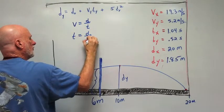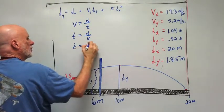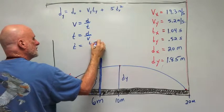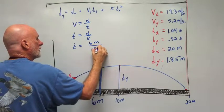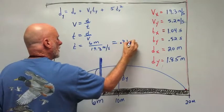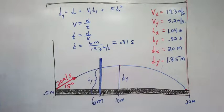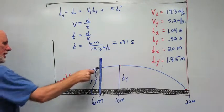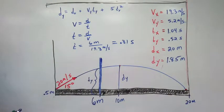V equals D over T. T equals D over V. T equals 6 meters over 19.3 meters per second. And that's going to equal 0.31 seconds. So she hits the ball, it's going to hit the wall at 0.31 seconds. Easy?